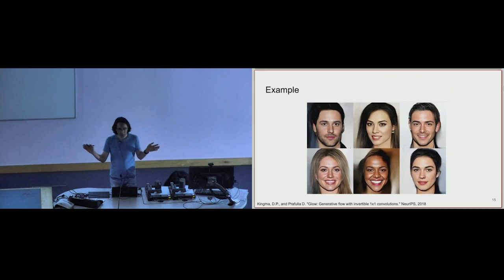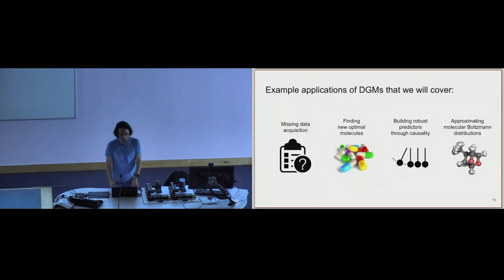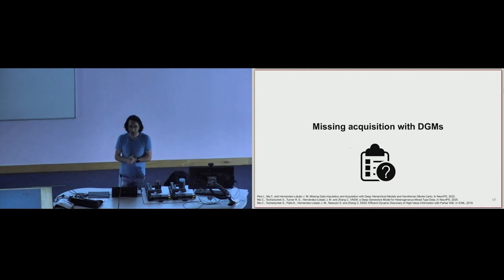There are many different applications of flows. This shows an example of how flows can be used to generate high-quality synthetic data that looks quite similar to original data. So that's a brief introduction to these models. Now I'm going to tell you how you can use these models to solve some real-world problems, focusing on missing data acquisition, finding optimal molecules with synthesis routes, robust prediction, and approximating Boltzmann distributions.